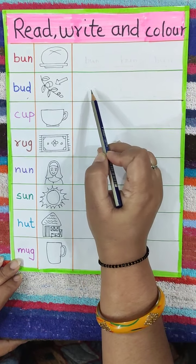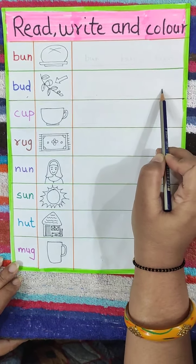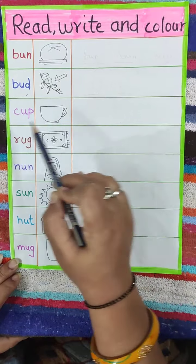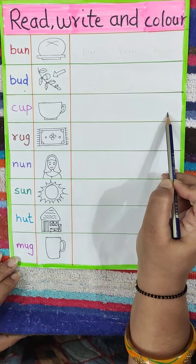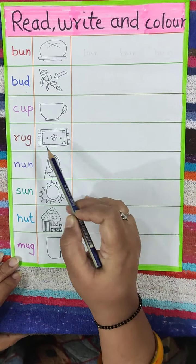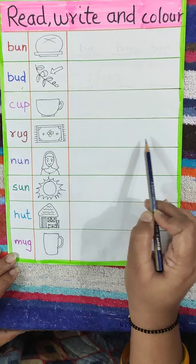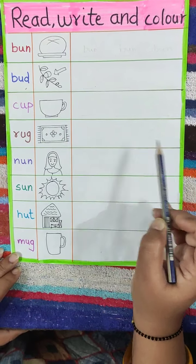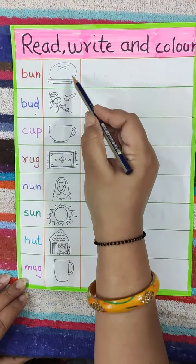You will write here B, U, D — bud, three times. C, U, P — cup, three times. R, U, G — rug, three times. When you finish this, you will color all these.